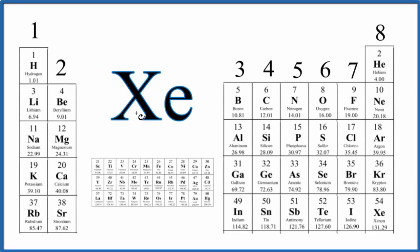In this video we'll write the Lewis structure for Xe. This is xenon. The first thing we need to do is figure out how many valence electrons we have for xenon before we write the Lewis structure.